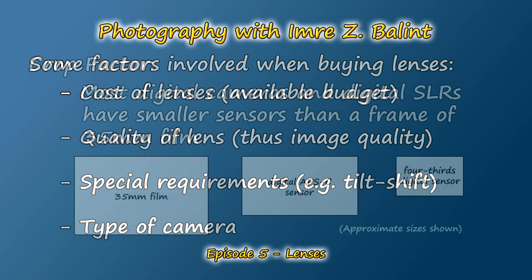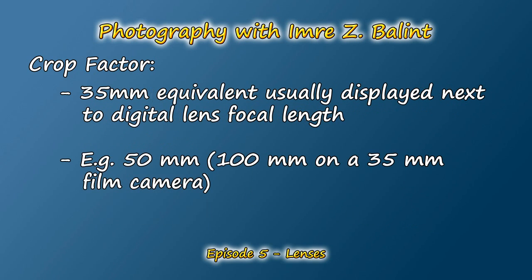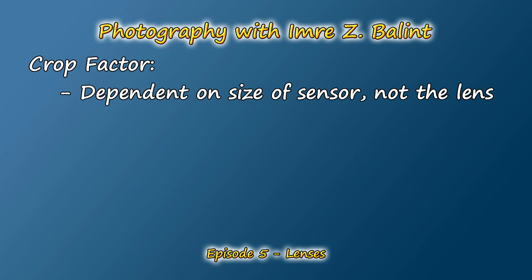Another important topic to understand in regard to lenses is the crop factor. To begin, most digital cameras and digital SLRs have sensors that are smaller than a frame of 35 millimeter film. It's quite common to see and hear the focal length on a digital camera related to its equivalent focal length in 35 millimeter format. I must clarify that the crop factor is dependent on the sensor size and really has almost nothing to do with the lens itself.